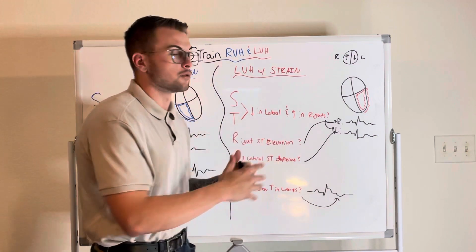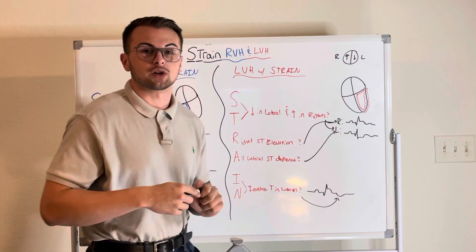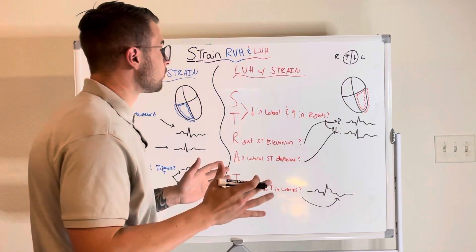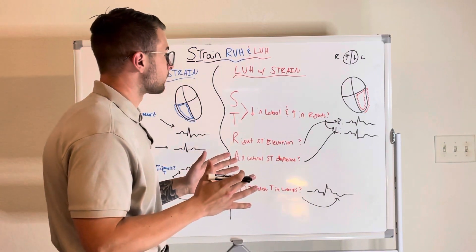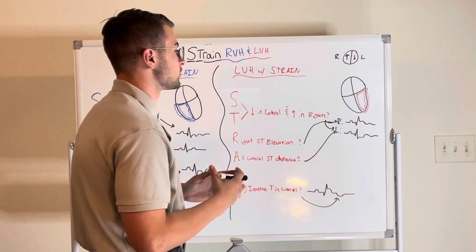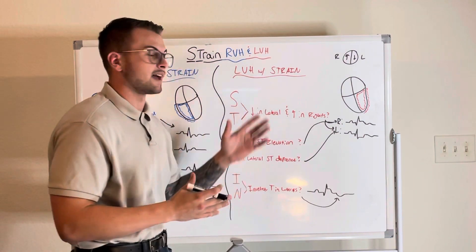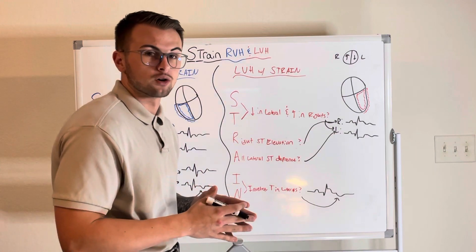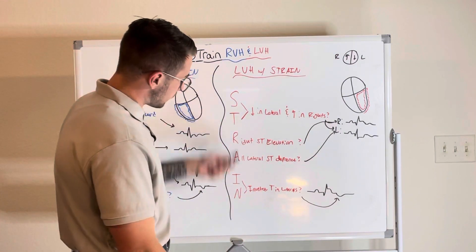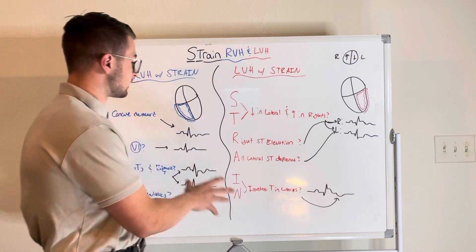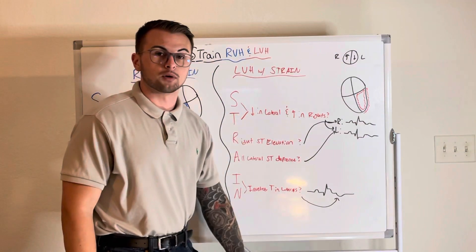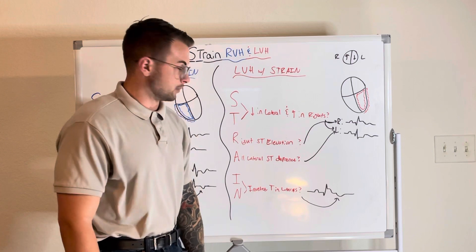Now we're going to move over to left ventricular hypertrophy with strain. Basically, this just means our patient has an enlarged left ventricle that has now developed a strain pattern. So how do we remember the strain pattern? We have to remember the word STRAIN — don't get these too confused, we're talking about left ventricular hypertrophy with strain at this moment.